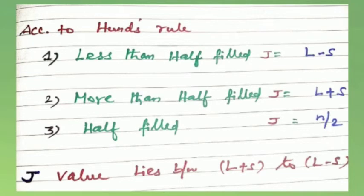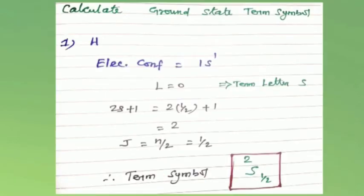Let's look at the first example: calculate the ground state term symbol for the hydrogen atom. The electronic configuration is 1s¹. For 1s¹, the L value is 0, so the term letter is S.